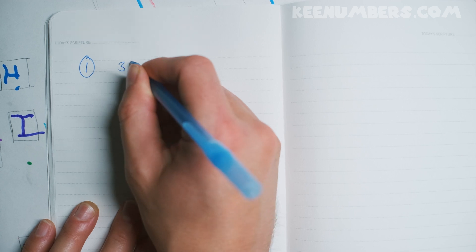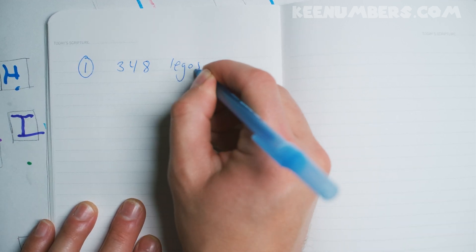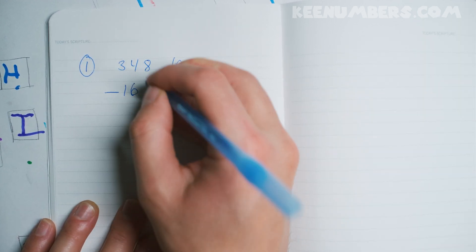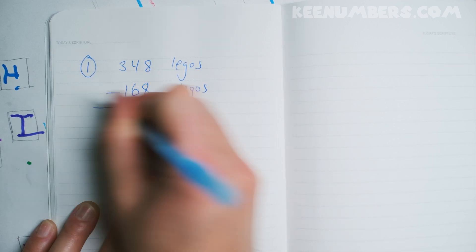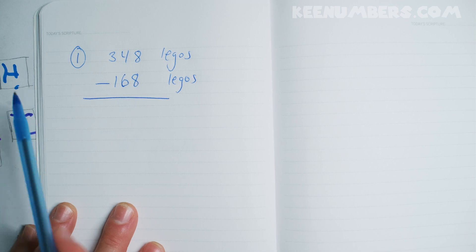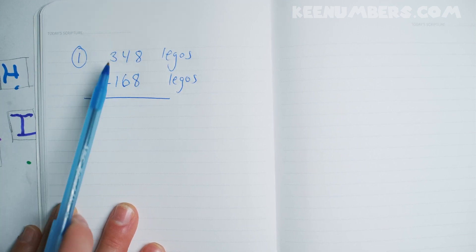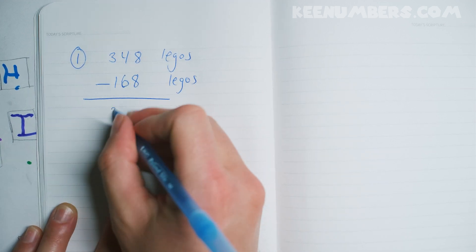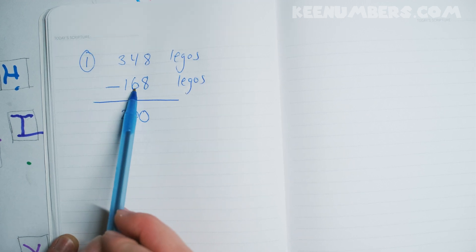Let's do 348 Legos minus 168 Legos. Oh, this looks challenging. Okay. Well, what is 300 minus 100 Legos? 200! 200 Legos. Excellent. Now, what is 40 Legos minus 60 Legos?